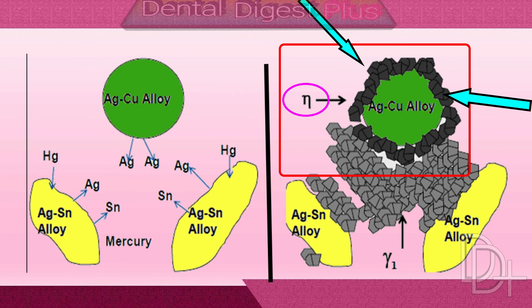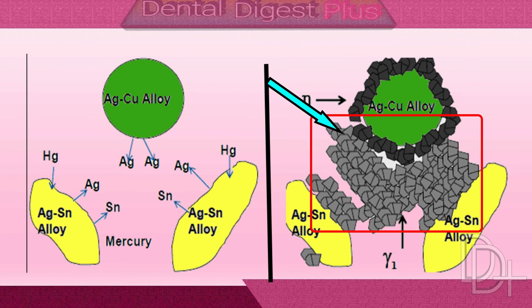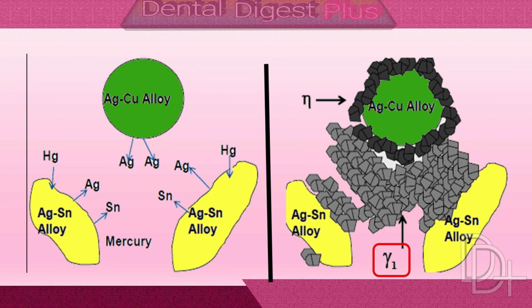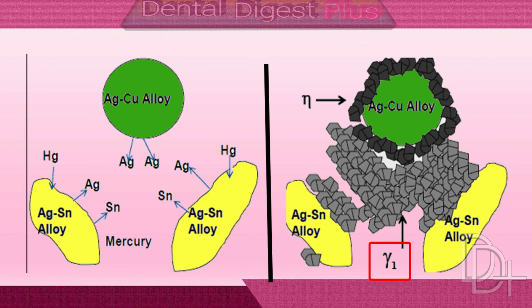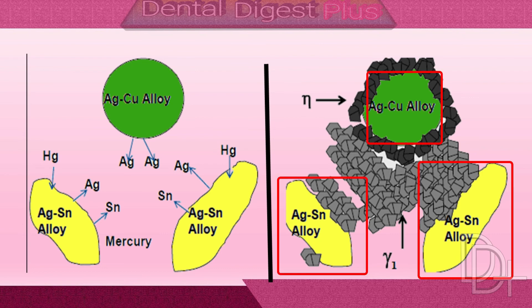The eta layer on silver-copper alloy particles also contains some gamma-1 crystals. The gamma-1 phase forms simultaneously with the eta phase and surrounds both the eta-covered silver-copper spherical alloy particles and the silver-tin lathe-cut alloy particles. Same as in the low-copper amalgams, gamma-1 is the matrix phase — that is, the phase that binds the unconsumed alloy particles together.